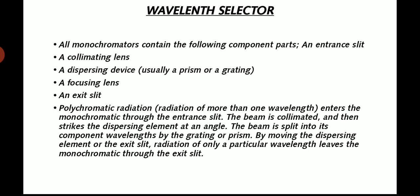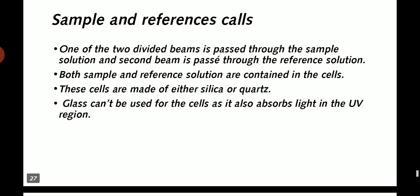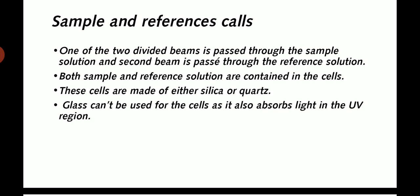Wavelength selector. All monochromators contain the following component parts: a collimating lens, dispersing device, focusing lens, and exit slit. Polychromatic radiation enters the monochromator through the entrance slit. The beam is collimated and strikes the dispersing element at an angle. The beam is split into its component wavelengths by the grating or prism. By moving the dispersing element or the exit slit, radiation of only a particular wavelength leaves the monochromator through the exit slit.